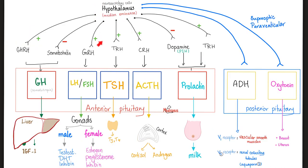The hypothalamus secretes GnRH, going to the anterior pituitary to secrete FSH and LH. They go to the gonad. In females, you get estrogen, progesterone, and inhibin. In males, you get testosterone, dihydrotestosterone, and inhibin. What's the function of inhibin? It inhibits. If you want to secrete less of these hormones, inhibin is your hero because it inhibits their secretion.